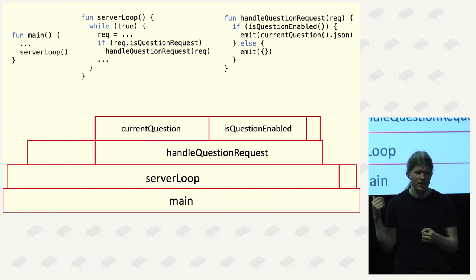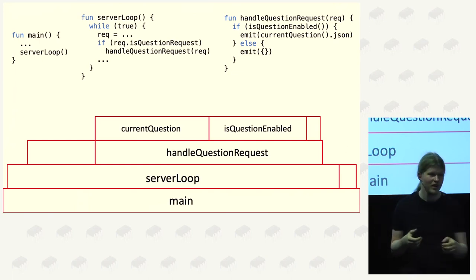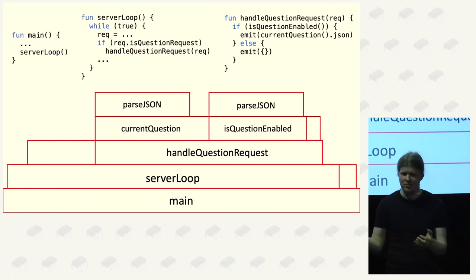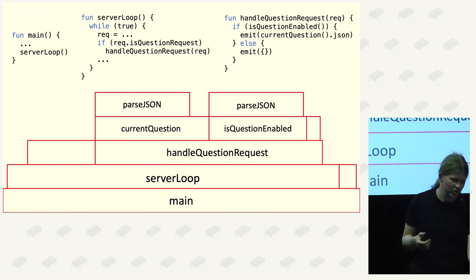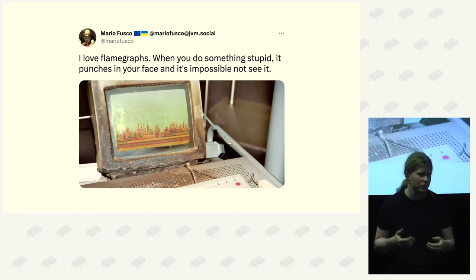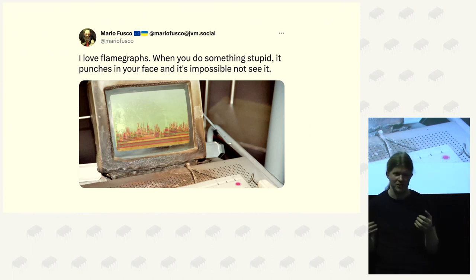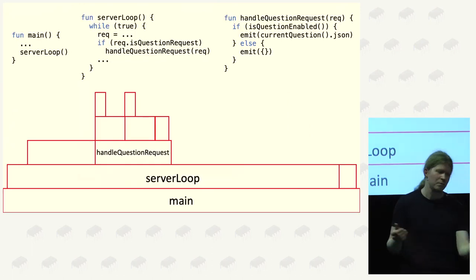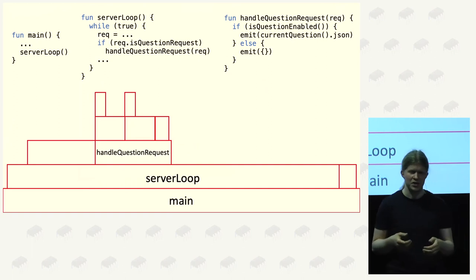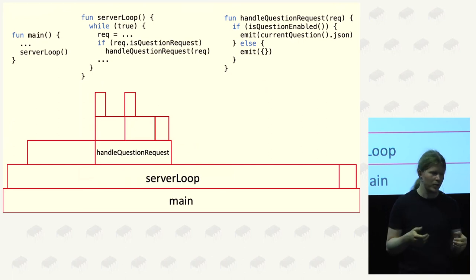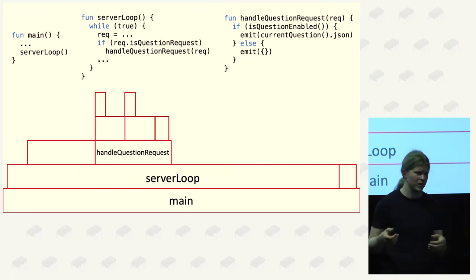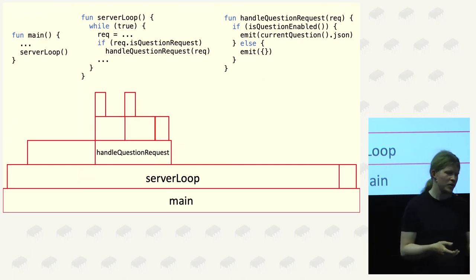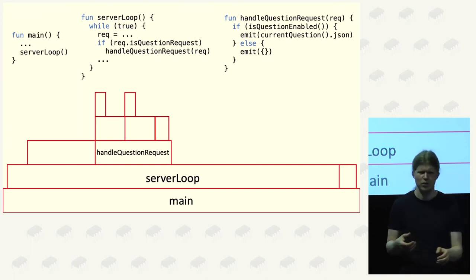Any guesses what both those methods are spending most of their compute time doing? Essentially, they were parsing JSON — and that was the revelation. To quote Mario Fusco: 'I love flame graphs. When you do something really stupid, it punches you in the face and you cannot not see it.' So replacing all the JSON parsing with a proper database — in this case SQLite, because using MariaDB would be overkill — worked nicely. SQLite is small, you can use it easily, and it worked.